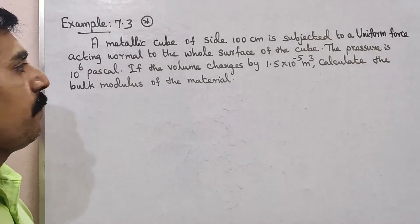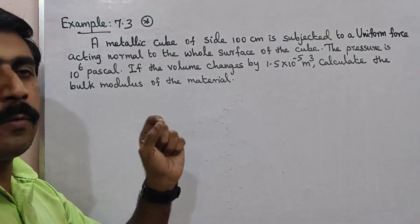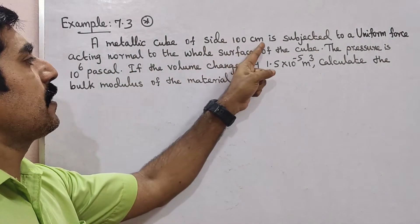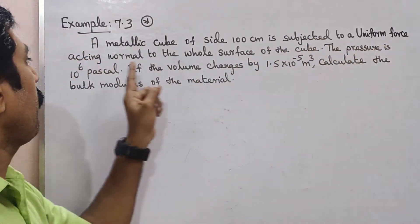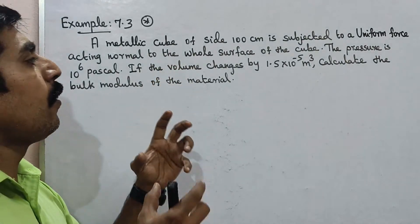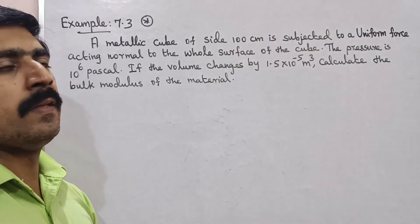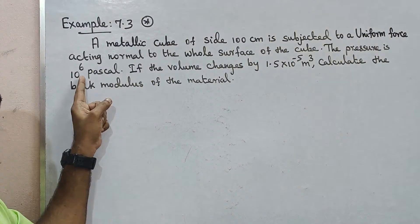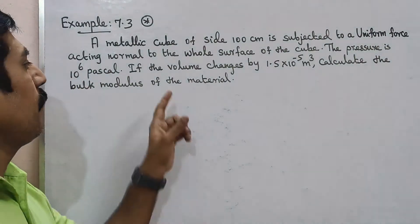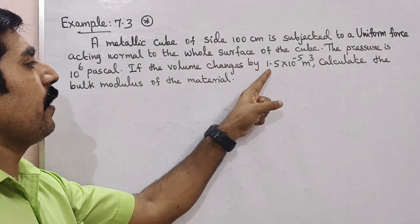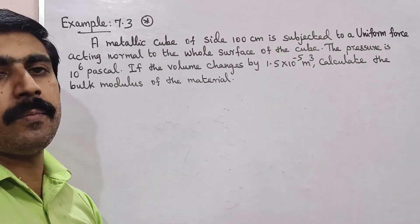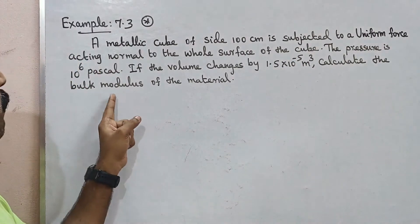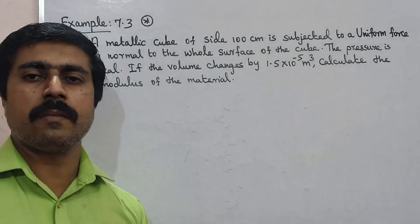What do we need to talk about? A metallic cube of size 100 cm is subjected to a uniform force acting normal to the whole surface of the cube. The pressure is 10 power 6 Pascal. If the volume changes by 1.5 into 10 power minus 5 meter cube, calculate the bulk modulus of the material.